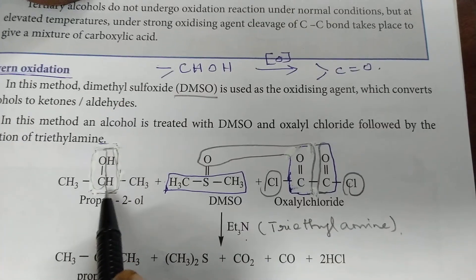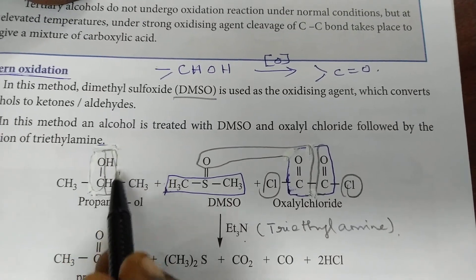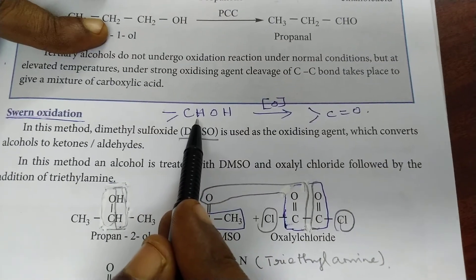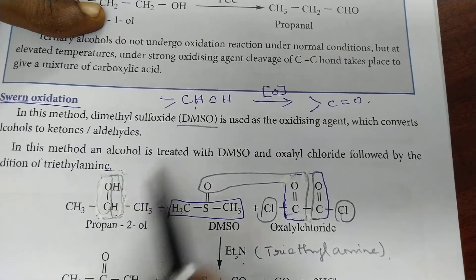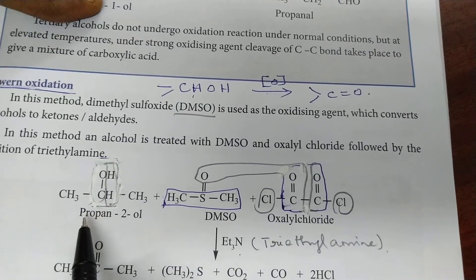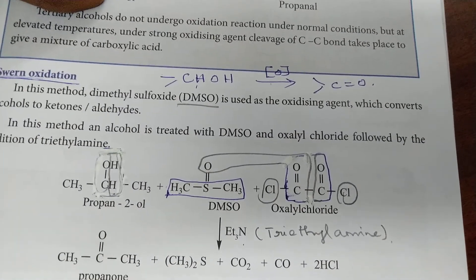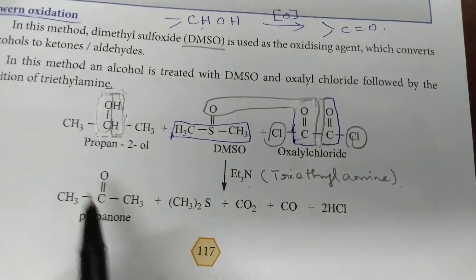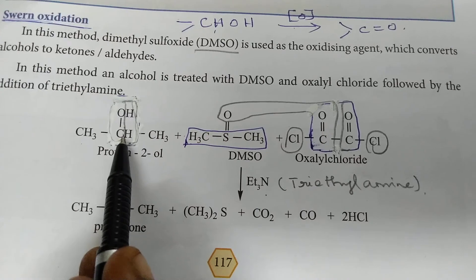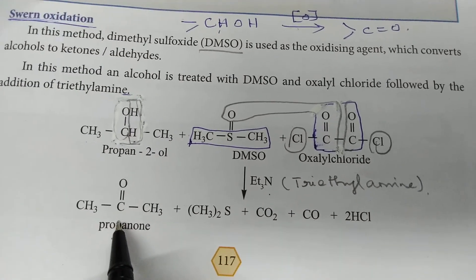Here, you have to make the cleavage in such a way that the two hydrogen atoms should be removed. At the same time, you have to remember the concept CHOH — that is a secondary alcoholic group — always on oxidation it changes into C=O. Therefore, the propan-2-ol, that is the secondary alcohol, is converted into the ketone, that is propanone. The CHOH from the reactant converts into a C double bond O ketone group.